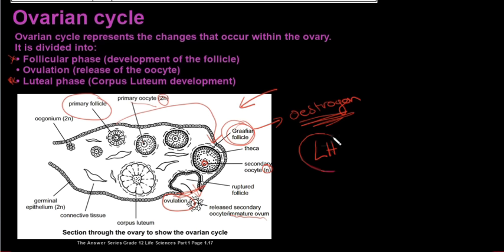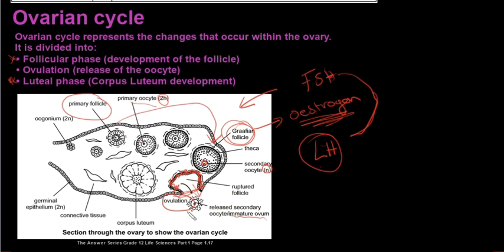Ovulation is stimulated by the hormone LH — the luteinizing hormone — also secreted by the pituitary gland. This brings us to the luteal phase, which is when the remains of the Graafian follicle — the portion that stays behind after ovulation — develops into the corpus luteum with the help of LH. It's a large mass of yellow cells with a pineapple ring structure that starts to develop.